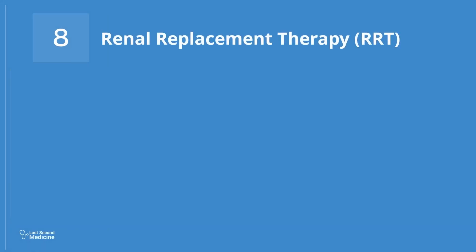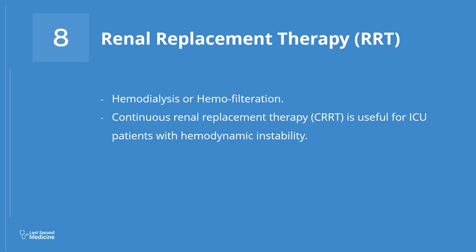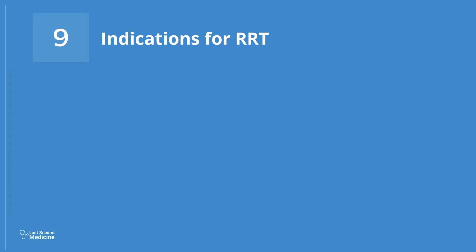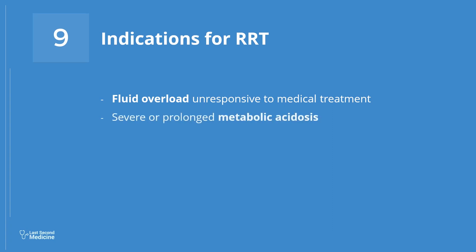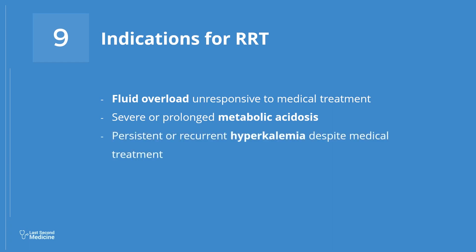Number 8: Renal Replacement Therapy. Renal replacement options for AKI include hemodialysis and hemofiltration. Continuous renal replacement therapy, or CRRT, is useful for ICU patients who are hemodynamically unsuitable to undergo dialysis. Peritoneal dialysis is rarely done in AKI. Number 9: Indications for Renal Replacement Therapy. The decision for RRT in AKI should be individualized. Possible indications include fluid overload especially pulmonary edema unresponsive to medical treatment, severe or prolonged metabolic acidosis, persistent or recurrent hyperkalemia despite medical treatment, and uremia such as uremic pericarditis or uremic encephalopathy.